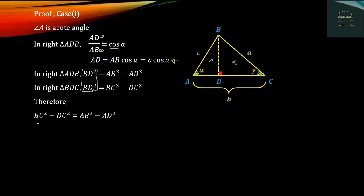BC² − DC² equals AB² − AD². That is, BC² equals DC² plus AB² minus AD². So DC² = DC² + AB² − AD².